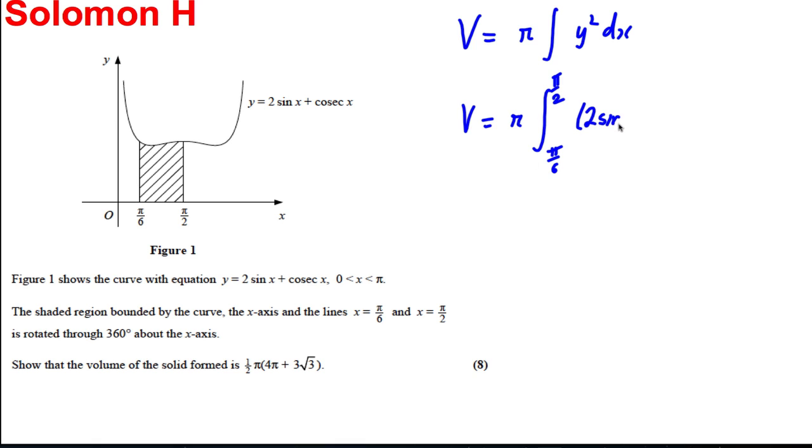Y squared is going to be 2 sine x plus cosec x, squared, dx. So that's pi times the integral between pi by 6 and pi by 2.